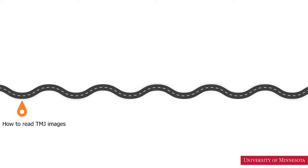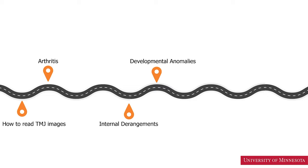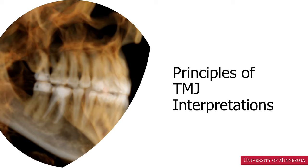This is the roadmap for today's video. We'll start with how to read TMJ images, mostly on CBCT images. We'll talk about arthritis or inflammatory changes, internal derangement or disc positions, developmental anomalies, tumors, and finally we'll end with trauma or fracture of the temporomandibular joints.